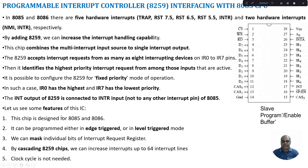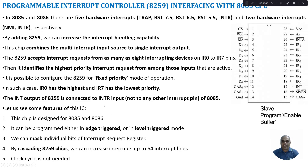Some important features of this IC: it is especially designed for 8085 and 8086 to increase interrupt capability. It can be programmed in either edge-triggered mode or level-triggered mode. We can also mask a particular interrupt using the interrupt request register and interrupt mask register to stop an interrupt from reaching the CPU. We can also cascade 8259 chips to increase interrupt capability further — up to 64 interrupt lines can be supported. Additionally, no extra clock cycle is required for processing interrupts.